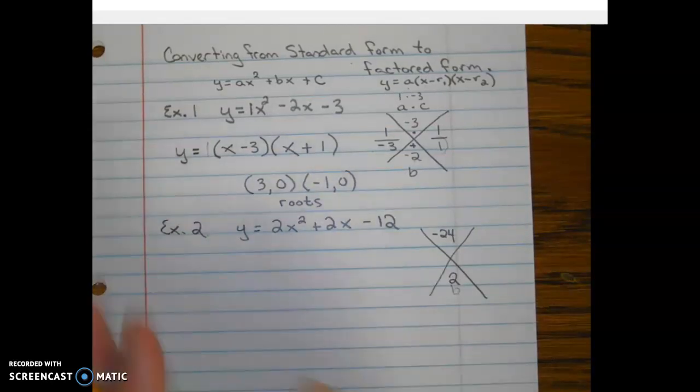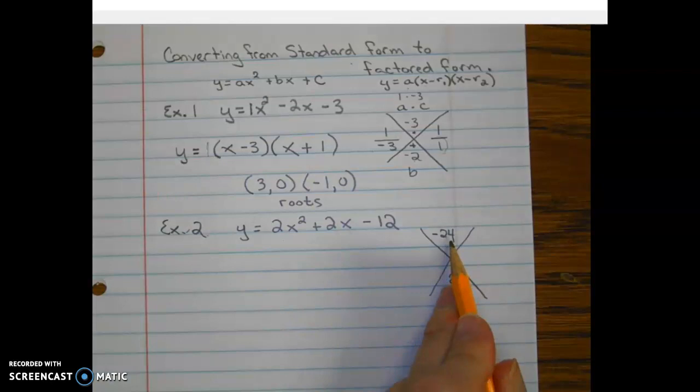All right. So here we go. So two numbers that multiply to give us the top number and they have to add to give us the bottom number.